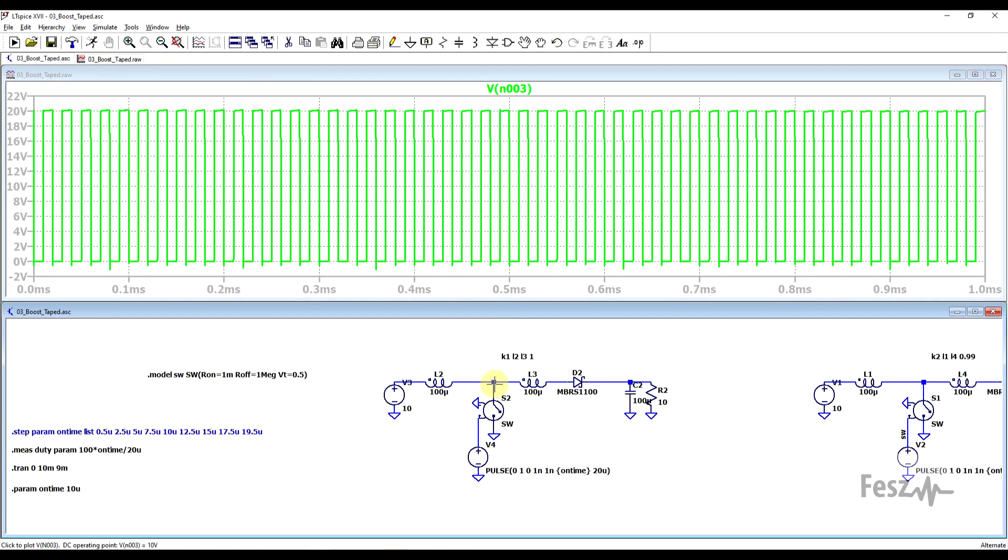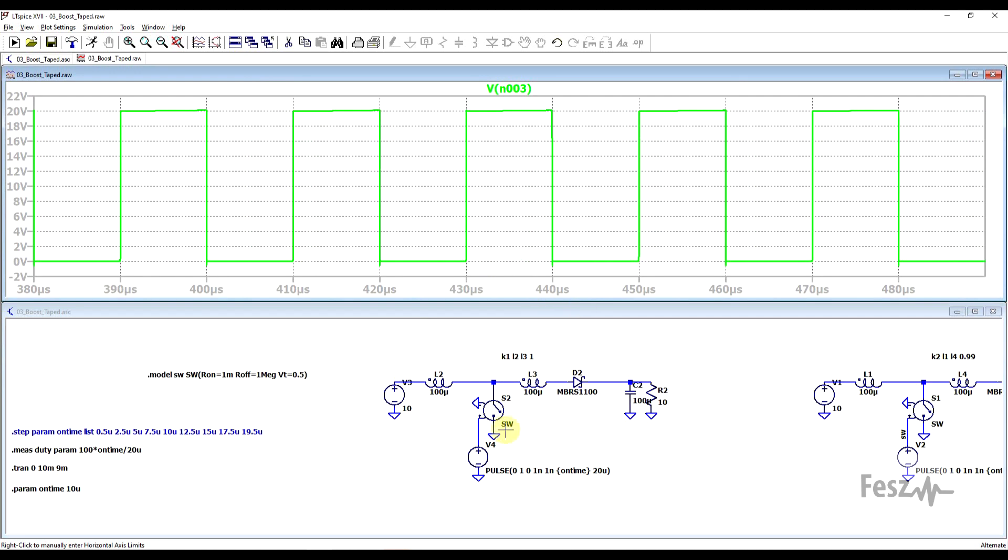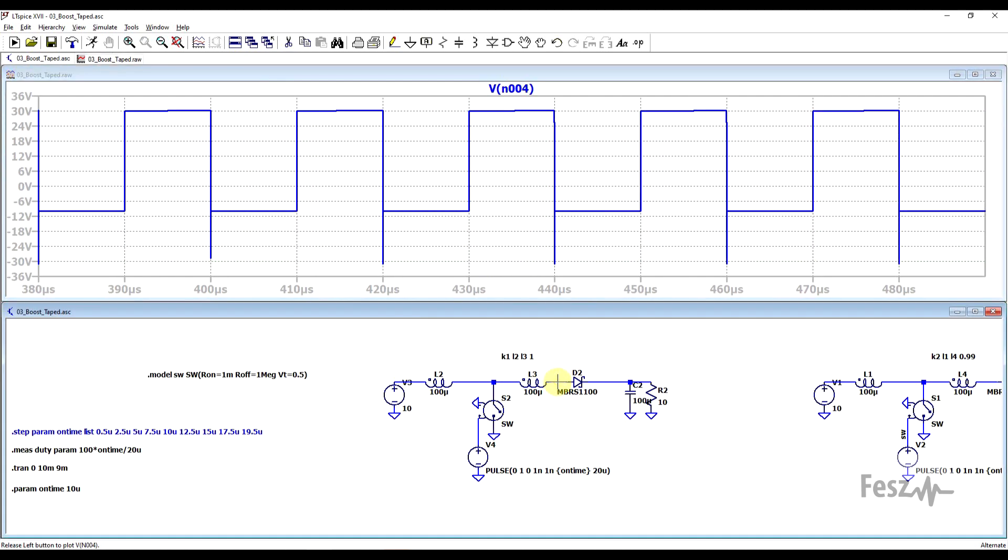And if we look at the other important node, the one connected to the diode, we see a similar story. However, since the diode that we're simulating is not an ideal component, we already start to see some of the problems that we might face. These spikes that are appearing could push the diode into having too large of a reverse voltage applied to it.